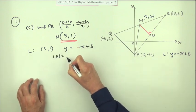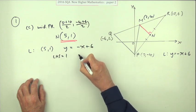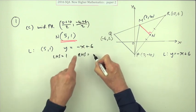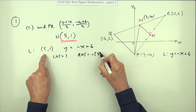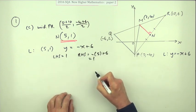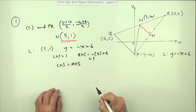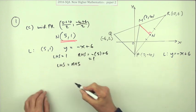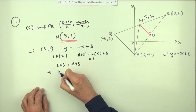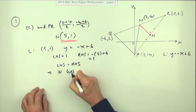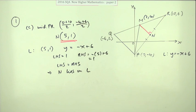Maybe I'll do a left hand side. The left hand side is the Y coordinate, which is 1. The right hand side would be the negative of the X coordinate plus 6, which is 1. Left hand side equals right hand side. Well, this is more something they might do later on, of course, which means I can state with confidence N lies on L, because I've given them all names.